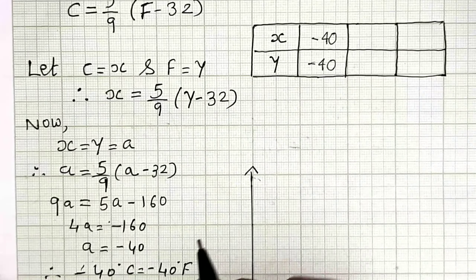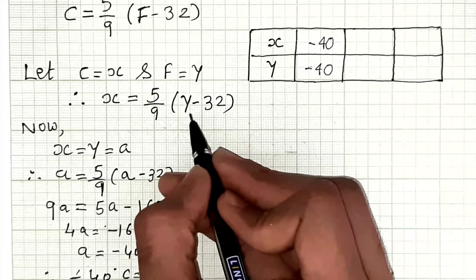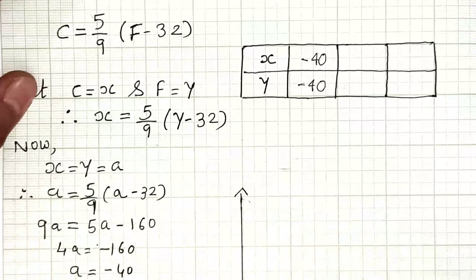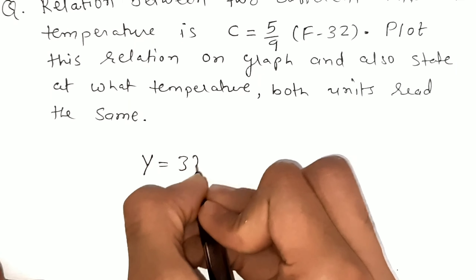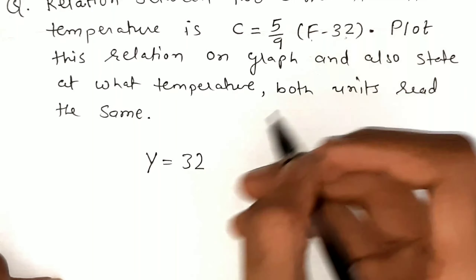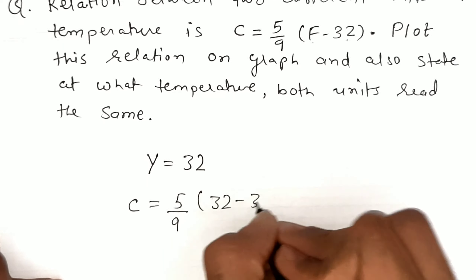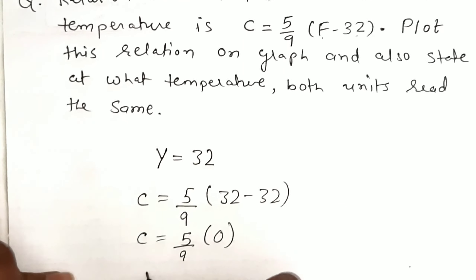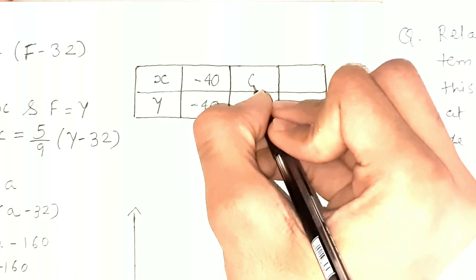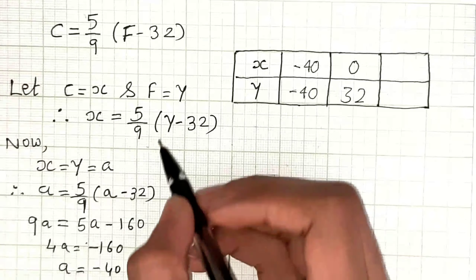We need three points to plot the line. For the second point, we take y equals 32 so that (y minus 32) cancels out and becomes 0. Putting y equals 32 for Fahrenheit, Celsius equals 5 by 9 into 0, which equals 0. So when Celsius is 0, Fahrenheit is 32. We'll note that down.